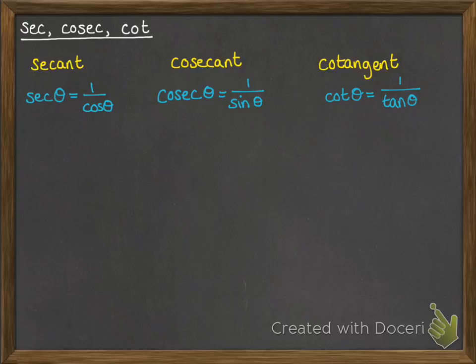The way that I remember these is the third letter. The third letter of sec is C, so it's 1 over cos. The third letter of cosec is S, so it's 1 over sin. And the third letter of cot gives 1 over tan. It just helps you to remember what's what.